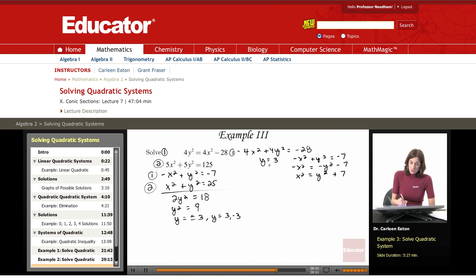I'm going to substitute 3 in wherever there's a y. So x squared equals 3 squared plus 7. Therefore, x squared equals 9 plus 7.